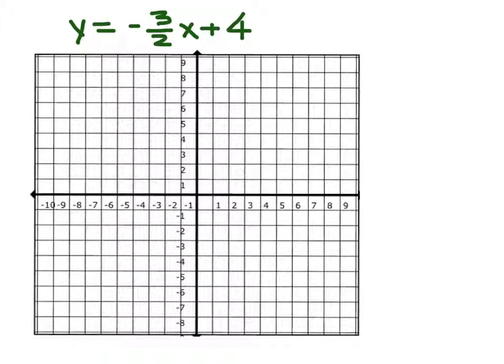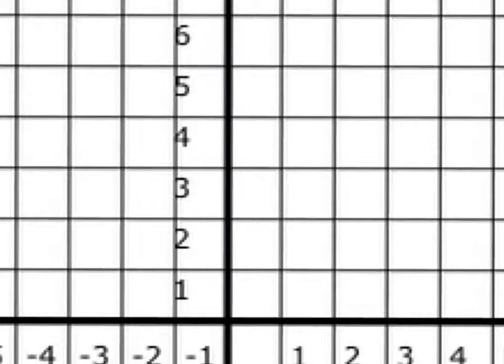Here's example one. y equals negative 3 halves x plus 4. What's the first thing I have to do to graph this equation? Yeah. Find positive 4 where? x axis or y axis? x is right here, y is here. y axis. Alright, so we go to the y axis and find positive 4 and we'll make a dot.